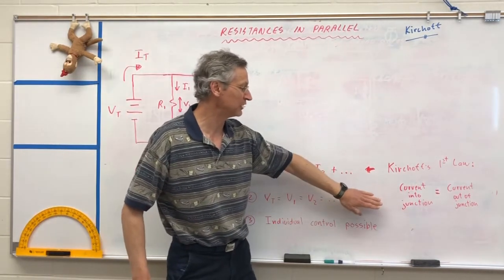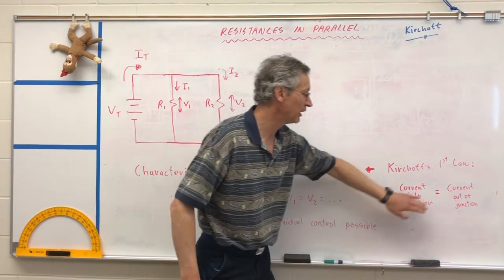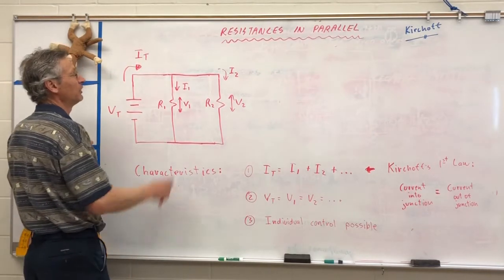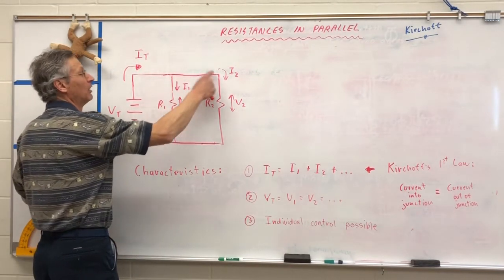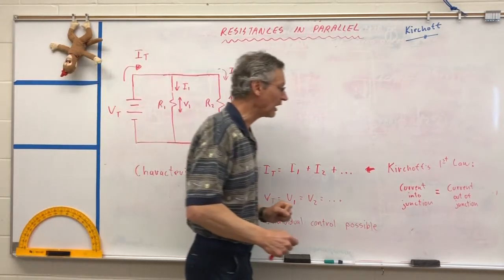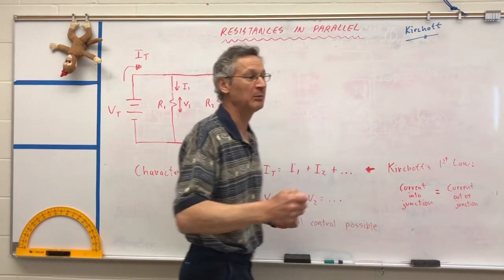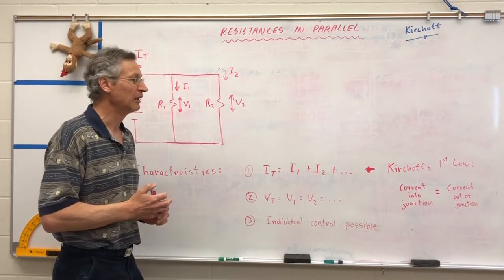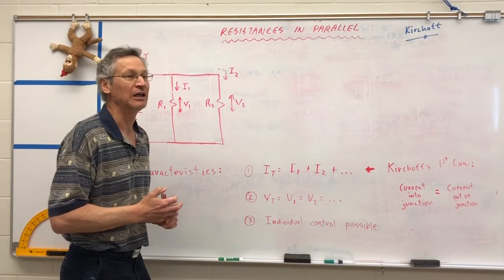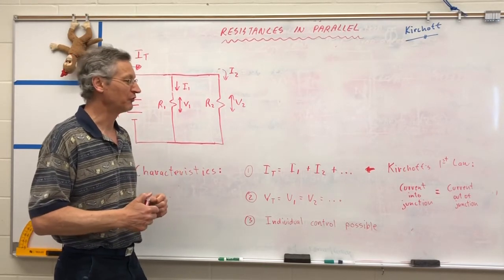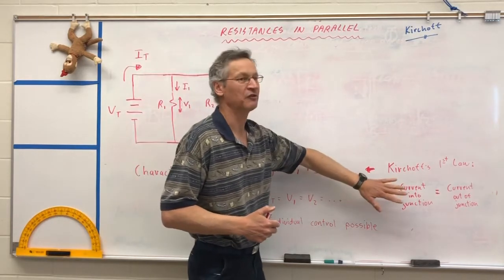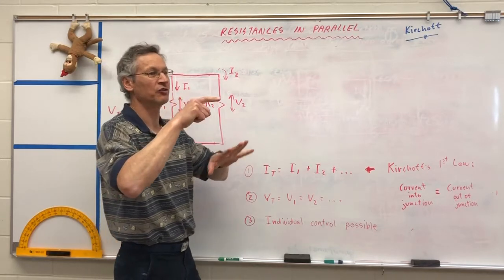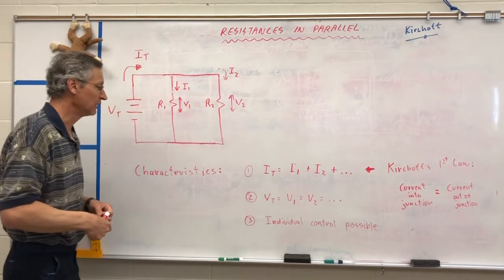That is actually Kirchhoff's first law. Kirchhoff's first law basically says the current into a junction is equal to the current out of a junction — the total current equals I1 plus I2. In university physics they might state it as: the sum of the currents into a junction is equal to zero, where currents going in are positive and currents leaving are negative. You add them all up and they cancel to zero.